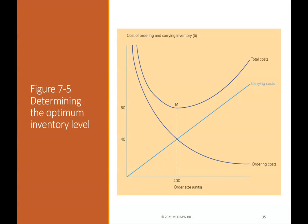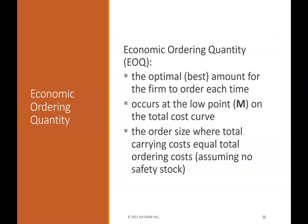Figure 7-5 illustrates determining the optimum inventory level — the cost of ordering and carrying inventory by order size. The Economic Ordering Quantity (EOQ) is the optimal best amount for the firm to order each time, occurring at the low point M on the total cost curve. This is the order size where total carrying costs equal total ordering costs, assuming no safety stock.